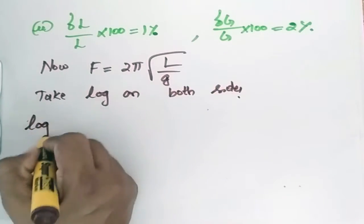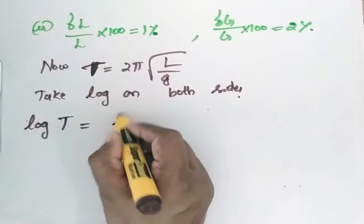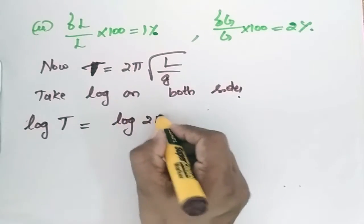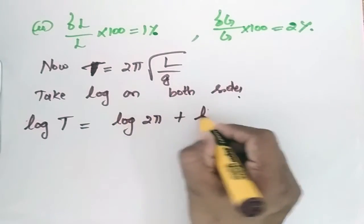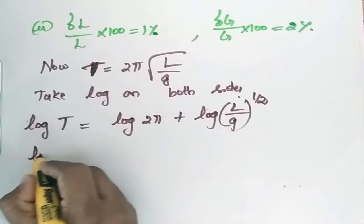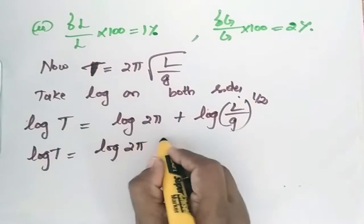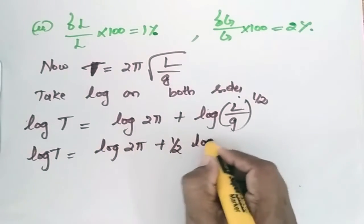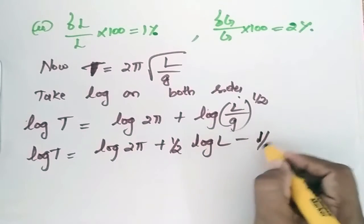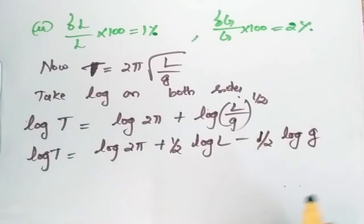So log T = log(2π) + log(L/g)^(1/2). Log T = log(2π) + (1/2)log L - (1/2)log g.